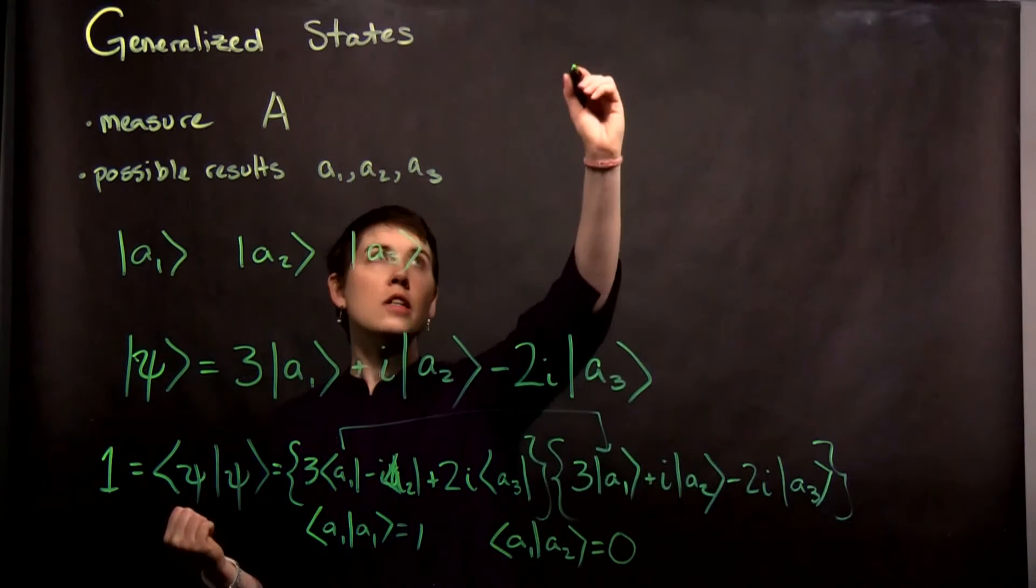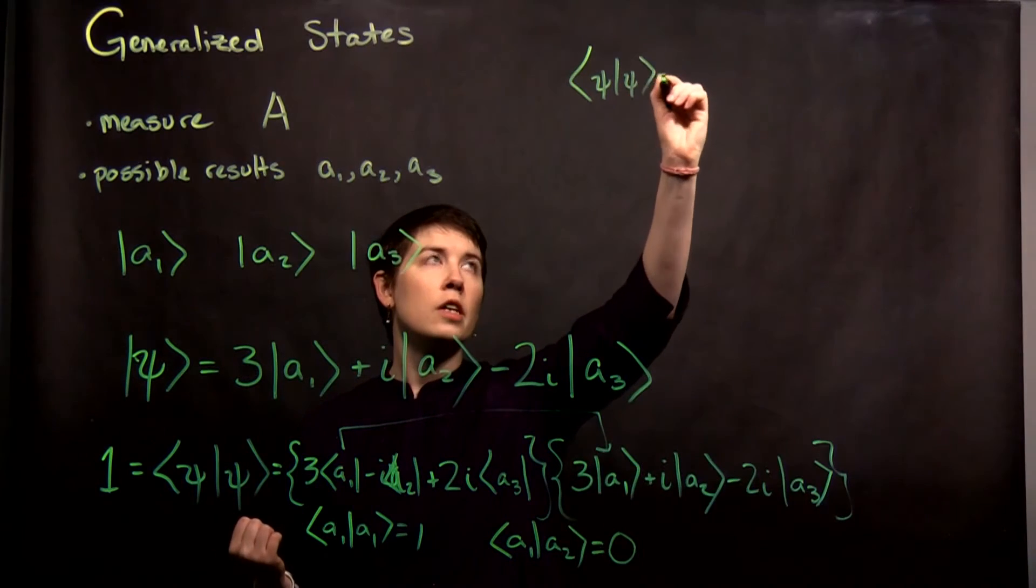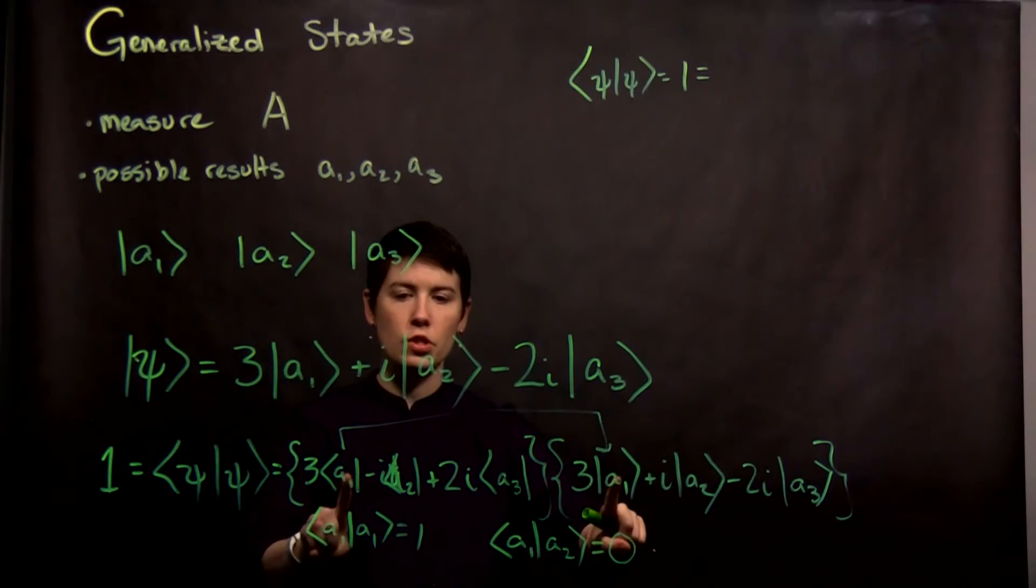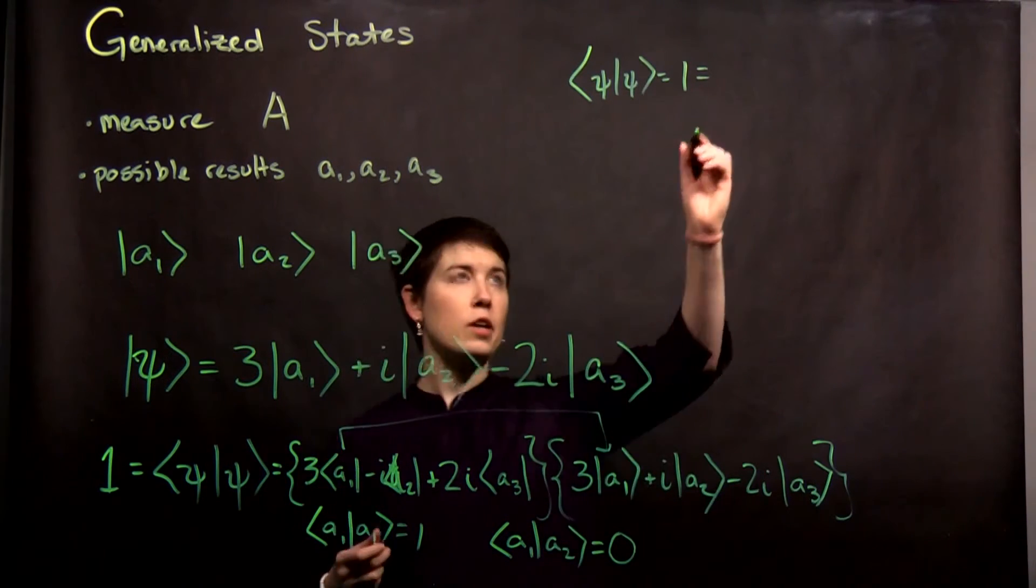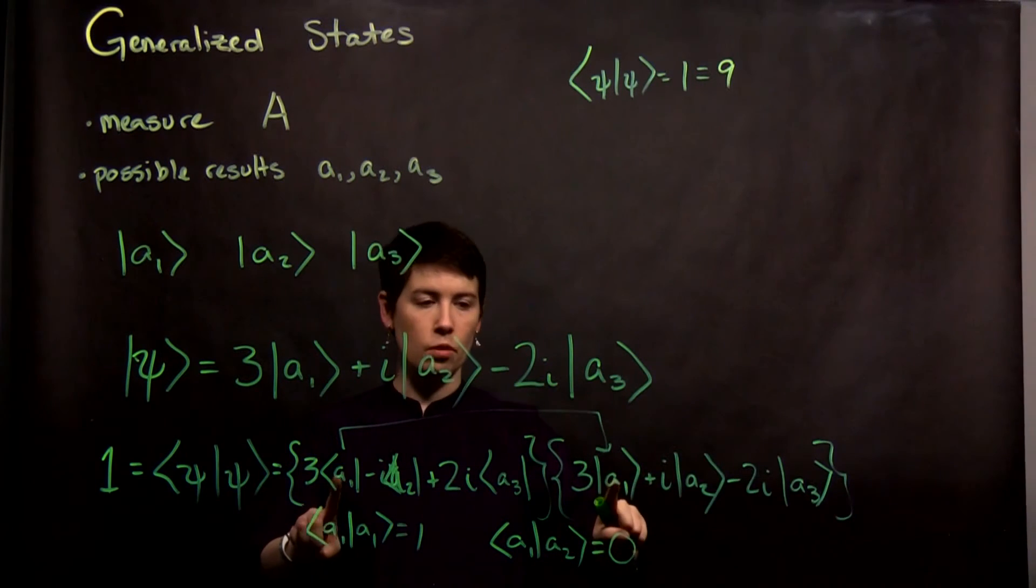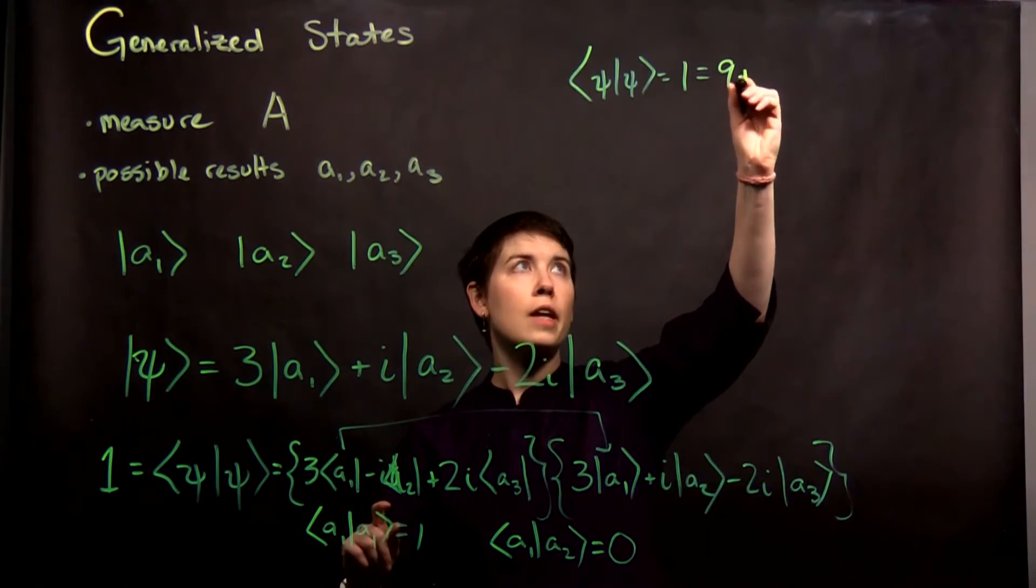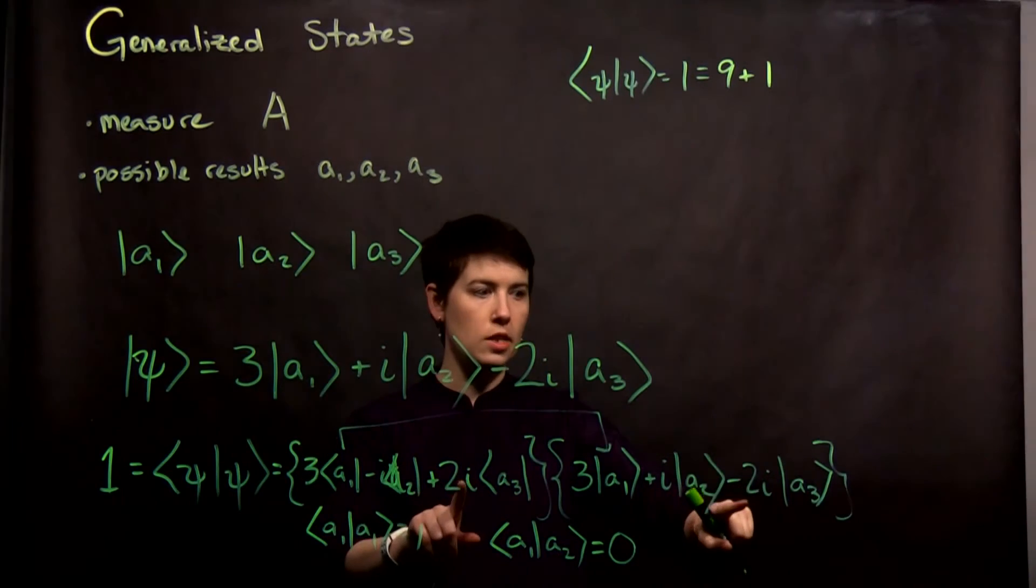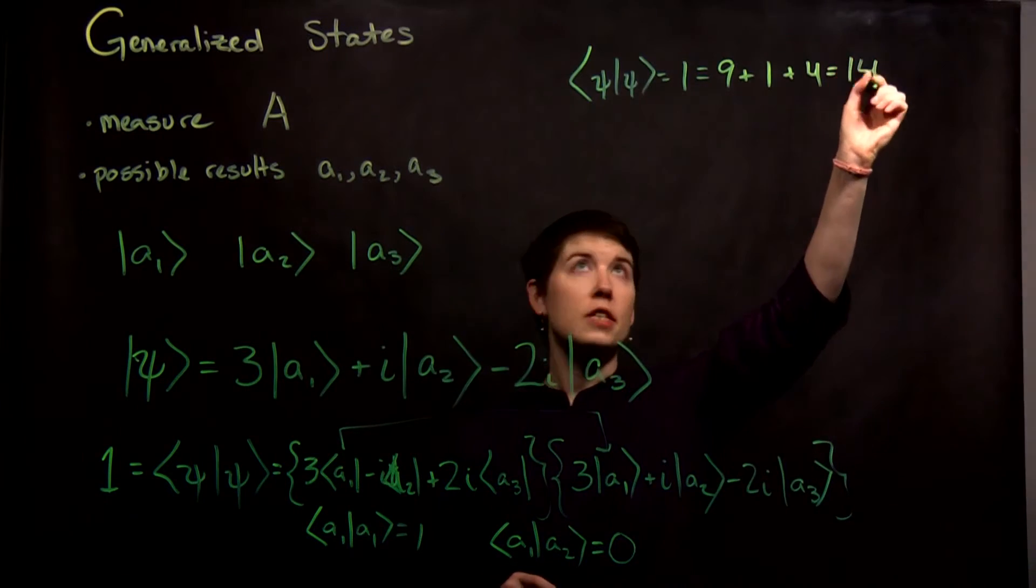So what that means is when we try to do this calculation, it's really similar to what we had before, where you only have to consider the term with itself. So this is going to work out to be 9, that A1 with A1 term, 3 times 3. Then we have the A2 term, which is -i times i, so that's positive 1. And then we have 2i times -2i, which will be 4. So that equals 14.